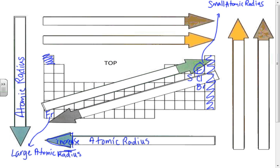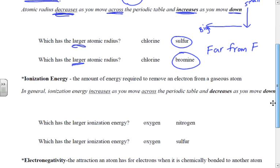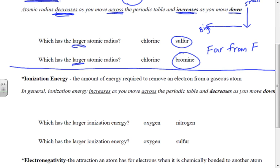The next trend we're going to address is ionization energy. If you take the first three letters and think about what an ion is — an ion is a charged atom, either positive or negative — it took on that charge because it either gained or lost electrons. So you can think of ionization energy as how much energy it's going to take to make an atom be an ion. It's specifically the amount of energy required to remove an electron.